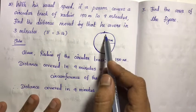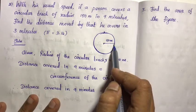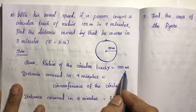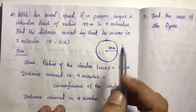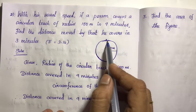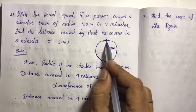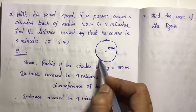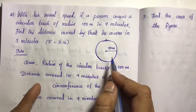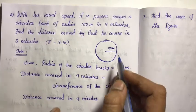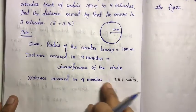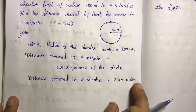Solution. Draw the figure. It is a circular track with radius 150 meters, so r equals 150 meters. The distance covered in 9 minutes equals the circumference of the circle. The formula for circumference is 2 pi r units.